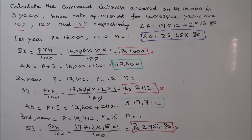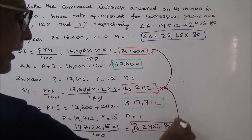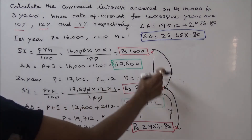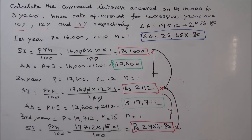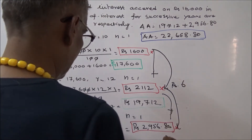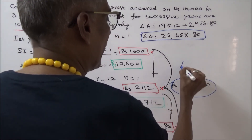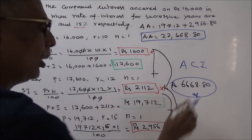The compound interest is obtained by adding all three interest amounts: 1,600 plus 2,112 plus 2,956.80, which equals 6,668.80 rupees. This is the total accrued compound interest. This is how you solve this problem.